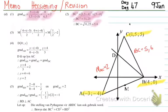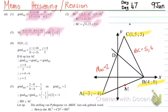Number 3: determine the coordinates of M, the midpoint of line AB. So M is the midpoint of AB. For the midpoint, I add the x values divided by 2, and add the y values divided by 2. So it's 4 plus negative 3 divided by 2, and 0 plus negative 4 divided by 2, giving M as the point (1.5, −2). Those are the coordinates for M.